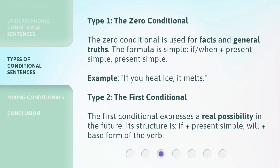Type 1: The Zero Conditional. The Zero Conditional is used for facts and general truths. The formula is simple: if or when plus present simple, present simple. Example: If you heat ice, it melts.